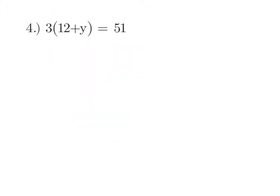Let's go through a few more examples. 3 times (12 + y) is equal to 51. Our plan is to first distribute that 3 into both terms just like we did above: 3 times 12 is 36, and 3 times y is 3y, equals 51. Now our equation is a regular two-step equation.